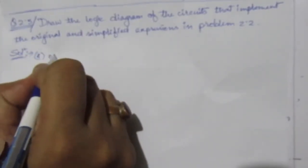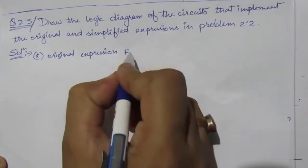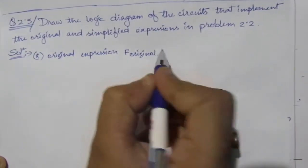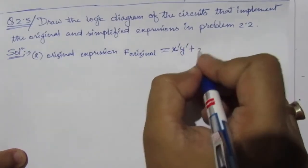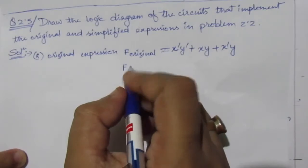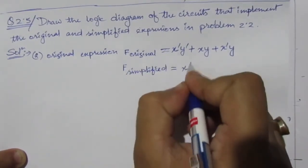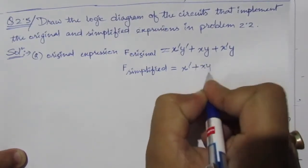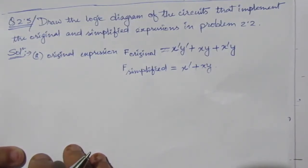For Part A, the original expression is: f original = x̄ȳ + xy + x̄y. And the simplified expression is f simplified = x̄ + xy. You need to go to the previous problem — the link is given in the description section of this video — to find that solution. So now we will only draw the logic diagram here.